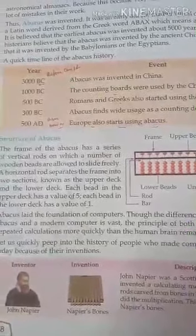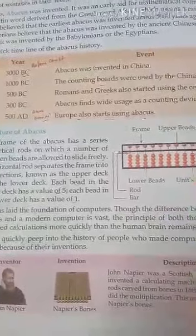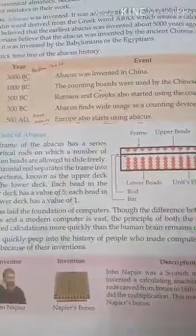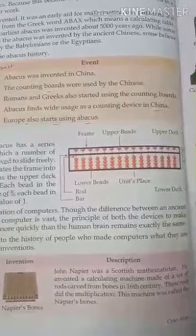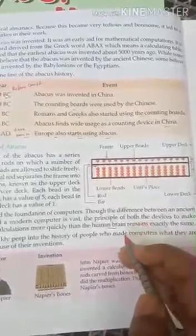The Abacus laid the foundation of the computer. Though the difference between an ancient Abacus and a modern computer is vast, the principle of both devices — to make repeated calculations more quickly than the human brain — remains exactly the same.